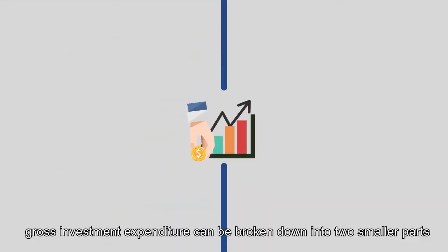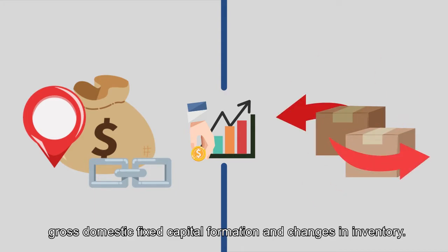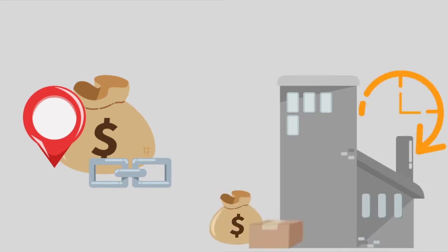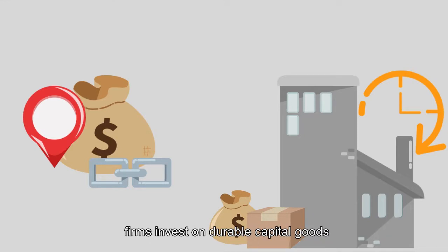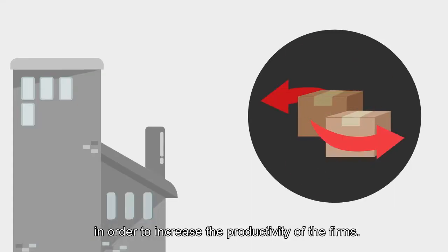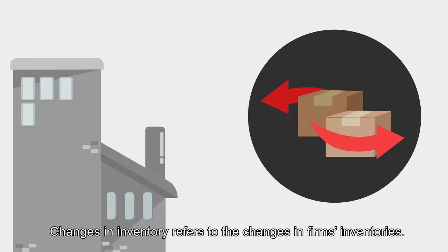On the other hand, gross investment expenditure can be broken down into two smaller parts: gross domestic fixed capital formation and changes in inventory. Gross domestic fixed capital formation refers to the resources that firms invest in durable capital goods in order to increase the productivity of the firms. Changes in inventory refers to the changes in firms' inventories.